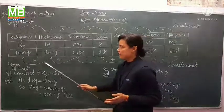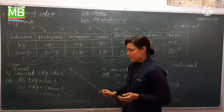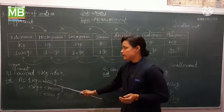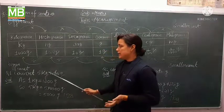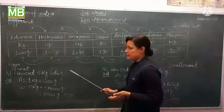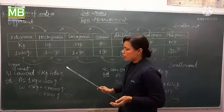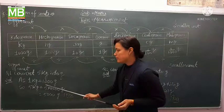For example, convert 5 kilogram into gram. We know that 1 kilogram equals 1000 gram. The unit is going from kg to gram. kg is bigger and gram is smaller, so from bigger to smaller we multiply. 5 kilogram equals 5 multiply 1000 gram equals 5000 gram.